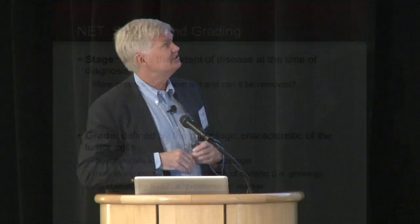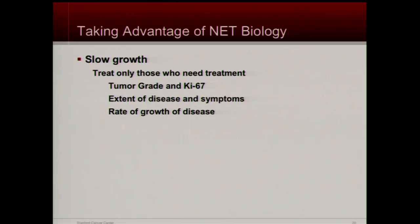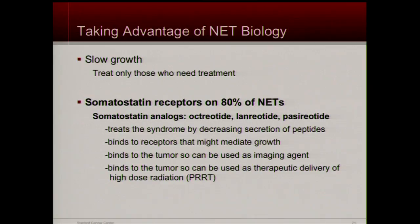We also stage tumors — staging defines the extent of disease: where is it and can it be removed? That's the first step toward determining what types of treatment make sense. We also grade it — the pathologist looks at it under the microscope and grades it one, two, or three: poorly differentiated or well differentiated. The slow growth allows us to just watch some of these tumors. Certain pathology tests sometimes tell us to just leave that person alone — maybe their tumor won't grow for three, five, or ten years, and then we can treat it when it does grow. The somatostatin receptors on 80% of tumors allow us to treat the syndrome with octreotide, use octreotide as an imaging agent, and use radioactive octreotide with a hot radioisotope as a treatment — the PRRT treatment many of you are aware of.